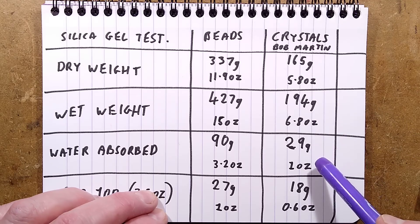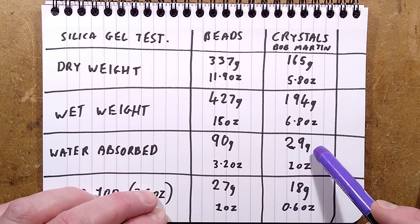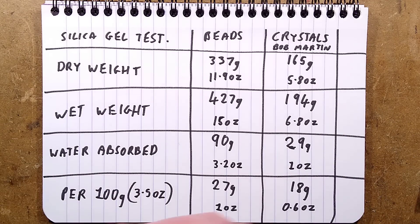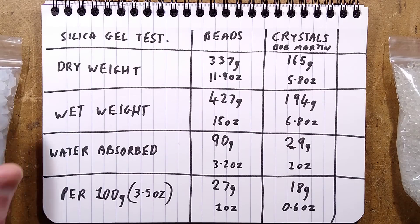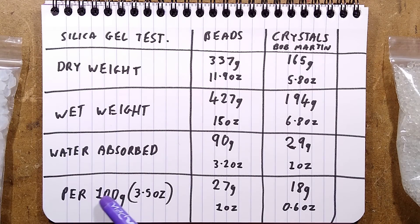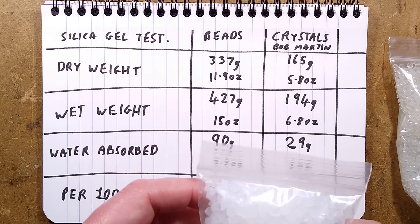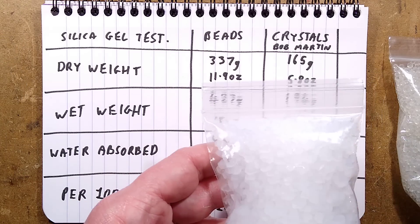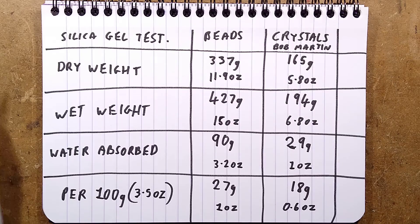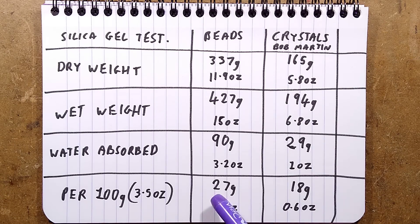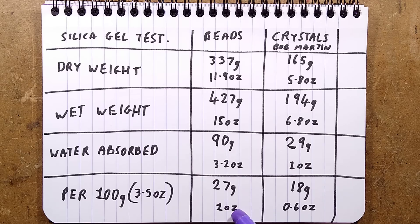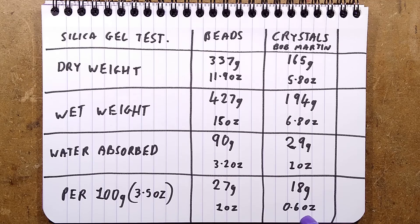When you compute it, weight for weight as opposed to the volume, then for 100 grams of crystals, and keep in mind that would be significant, this would be about twice the bulk of the beads, but for 100 grams or 3.5 ounces it will absorb typically 27 grams or 1 ounce of liquid from the air, or the crystals will absorb 18 grams or 0.6 ounce of water from the air.